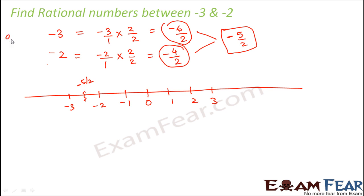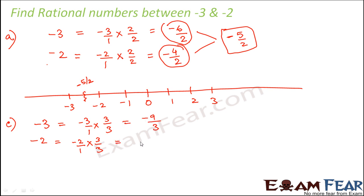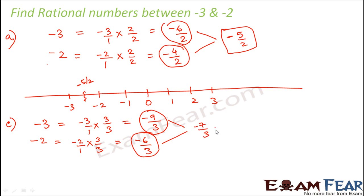To find more rational numbers, multiply the numerator and denominator by a bigger number. If we multiply by 3, we get -9/3 and -6/3. Between -9 and -6 we have -7 and -8, giving us -7/3 and -8/3 — two rational numbers. These are different from -5/2 because between -3 and -2 there exist infinitely many rational numbers.